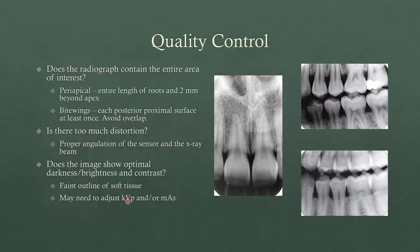You might need to adjust KVP or MAS, as we talked about in class last time. Usually all that we're going to be able to change is the time, so that's how we increase our MAS. Milliamperage and time are lumped together because they have the same effect. In this case we're just going to do a longer exposure time if it is too light. If it's too dark, you need to shorten the time.